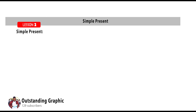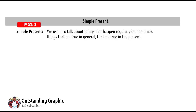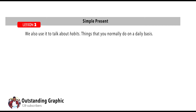The simple present is used to talk about things that happen regularly, things that are true in general, and things that are true in the present. For example: the earth goes around the sun. We also use the simple present to talk about habits — that is, things you normally do on a daily basis. For example: I brush my teeth every day.